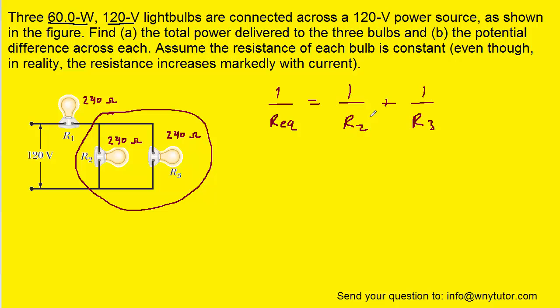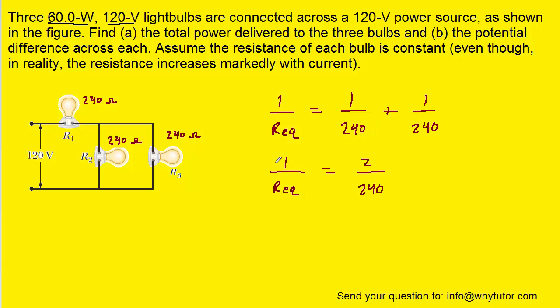Plugging in the known values for R2 and R3, adding together because they already have a common denominator, and then inverting both sides of the equation would show us that the equivalent resistance of R2 and R3 is equal to 240 divided by 2, which of course simplifies to 120 ohms.